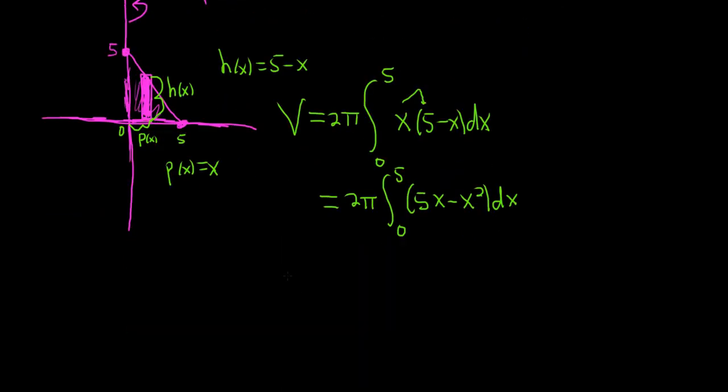We can now integrate each piece with the power rule. So this is 2 pi. Here we have 5x to the 1, so it's going to be 5x squared over 2 minus, here we have x squared, so that will be x cubed over 3. And we're going from 0 to 5.